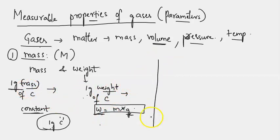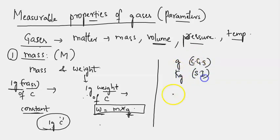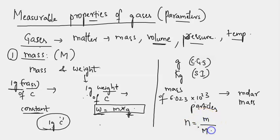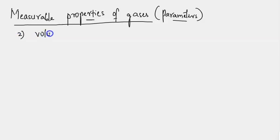The units for mass are grams in CGS and kilograms in SI or MKS units. The mass of 6.023 × 10²³ particles equals one mole, so the mass of one mole of any substance equals its molar mass. We relate mass to moles by: number of moles (n) = given mass ÷ molar mass of the substance.